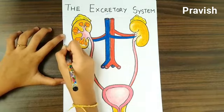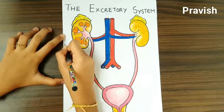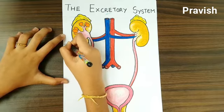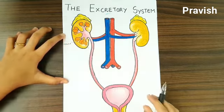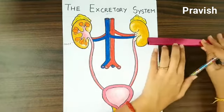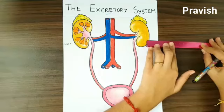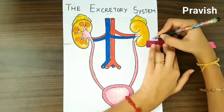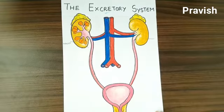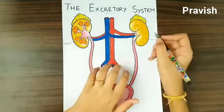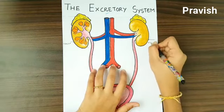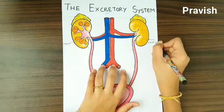So this is called the calyx. This is the kidney — this is the outer section of the kidney, and this is the inner section of the kidney where the calyx will be present.